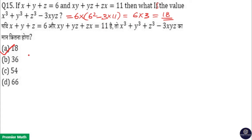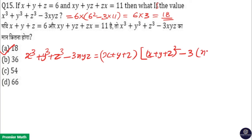I will show you that. x cube plus y cube plus z cube minus 3xyz is equal to x plus y plus z into x plus y plus z the whole square minus 3 into xy plus yz plus zx. This is a formula.